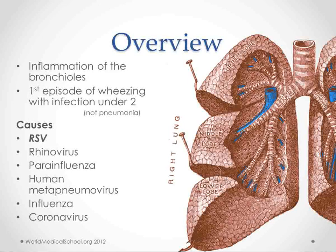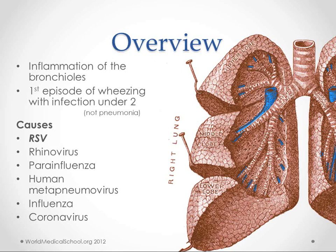So what is this? Sometimes we just call it an RSV infection because that's the major cause of it, but it's not the only cause. Really, the definition of bronchiolitis is inflammation of the bronchioles, and the clinical definition is usually just the first episode of wheezing with an infection under the age of 2 — that's not pneumonia. So clinically, we don't actually assess if the bronchioles are inflamed; we just assume they are if the kids are wheezing and they don't have pneumonia.